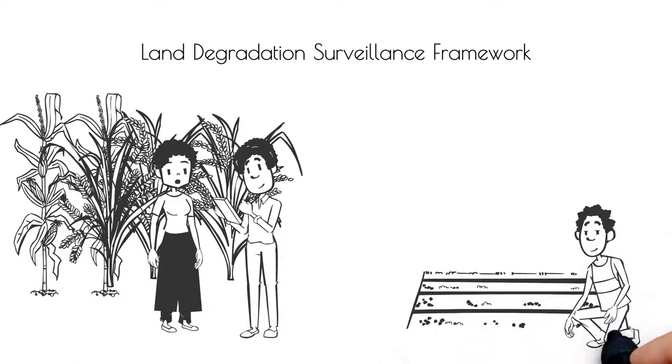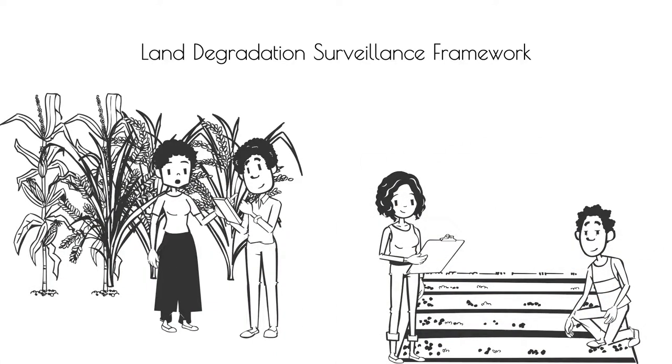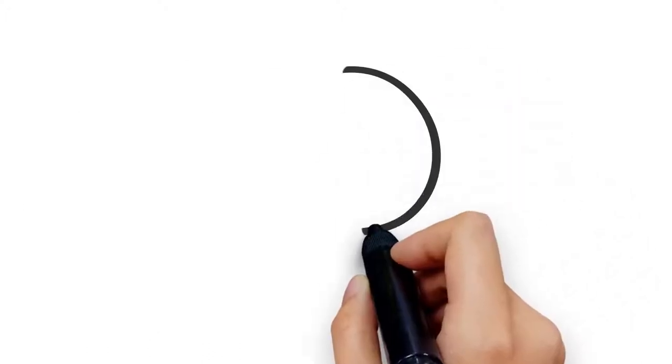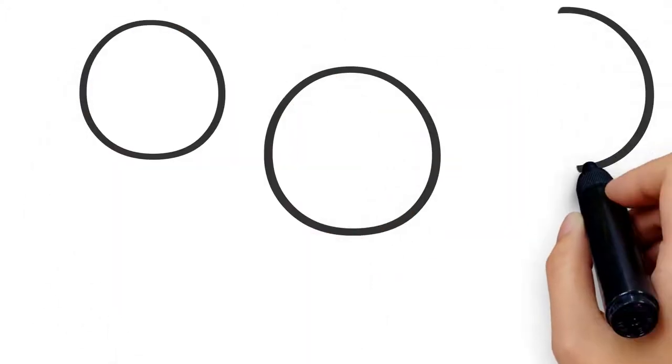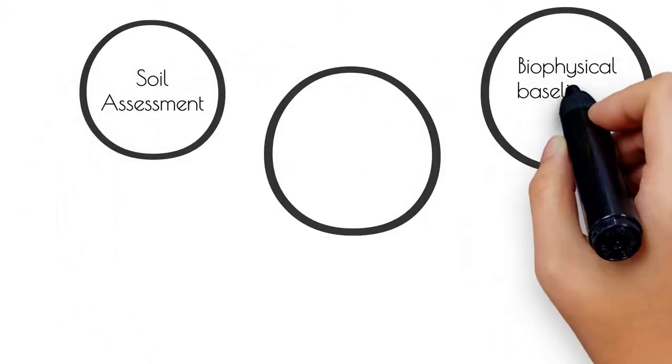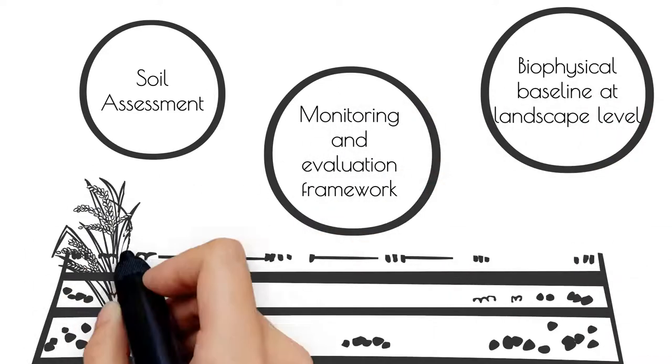For this, we suggest working with the Land Degradation Surveillance Framework. This assesses the soil for multiple factors that might hinder successful agricultural practices at the same location across landscapes.